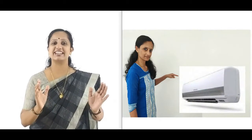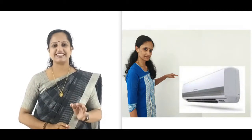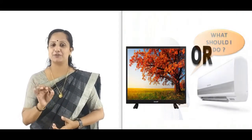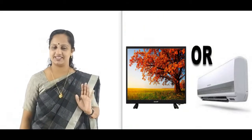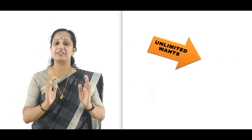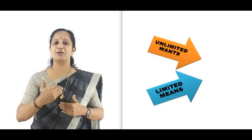Meet Miss Pooja. She wants to purchase a TV and at the same time an AC, both worth Rs 30,000 each. But she has only Rs 32,000 with her. Clearly she cannot purchase both commodities at a time. She has to forgo either the TV or the AC, so she has to make a choice. Thus, it is the mismatch between unlimited wants and limited resources that leads to the problem of choice.